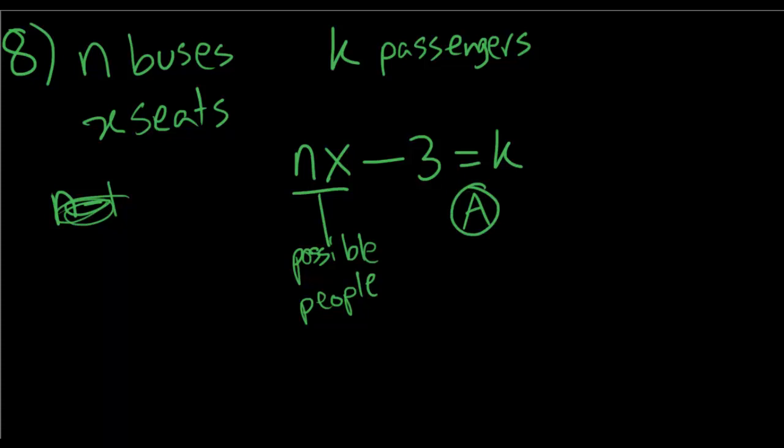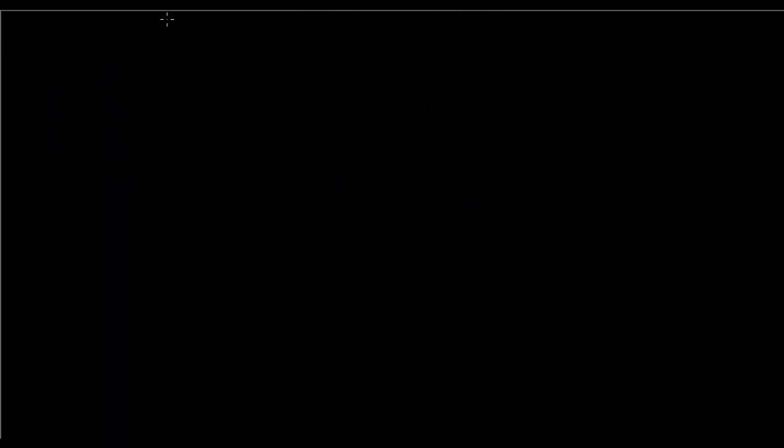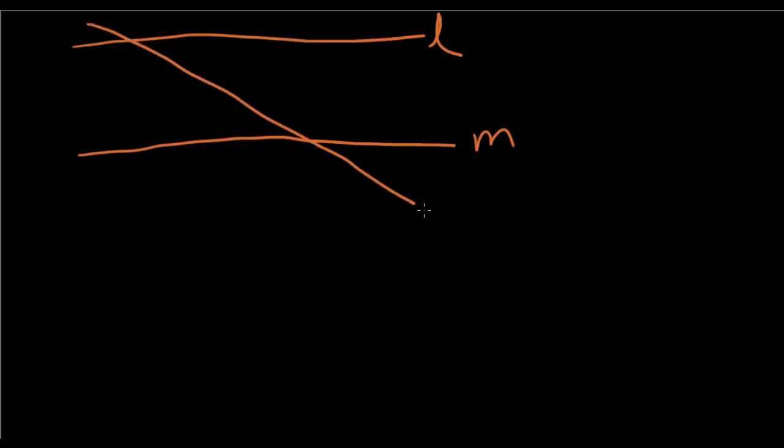Number nine is some drawing. Okay, so parallel lines l and m. This is k, this is x degrees. And there's another line going down. This is 50, this is 80. Okay, so in the figure above line l is parallel to line m. What is the value of x?